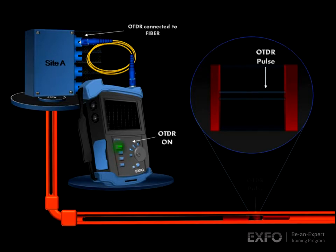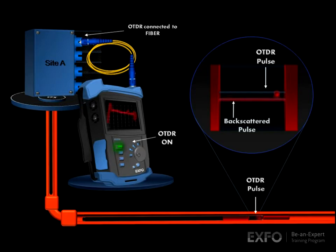The OTDR operates on a principle similar to radar. A pulsed laser signal is injected into the glass fiber, and the subsequent backscattered or reflected signal is timed and measured for both power and distance.